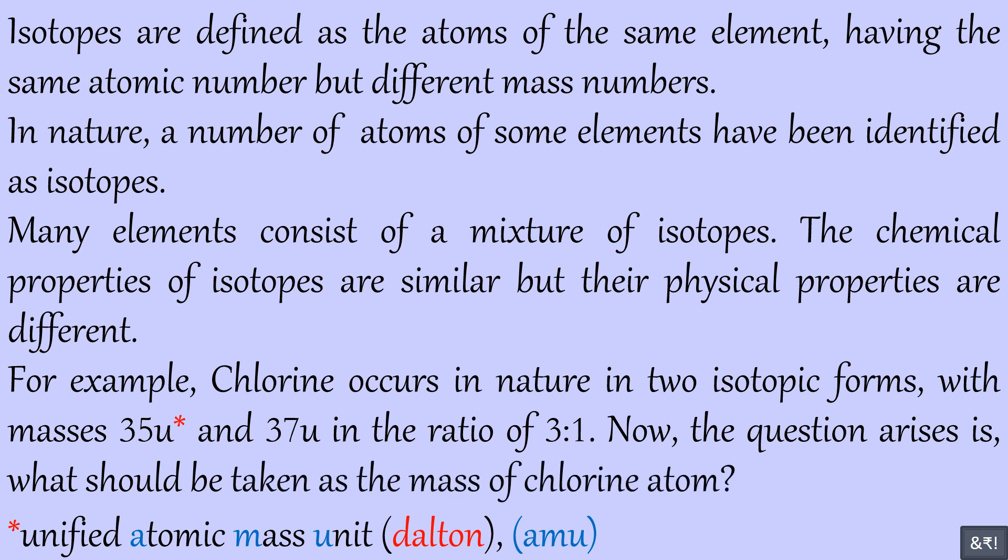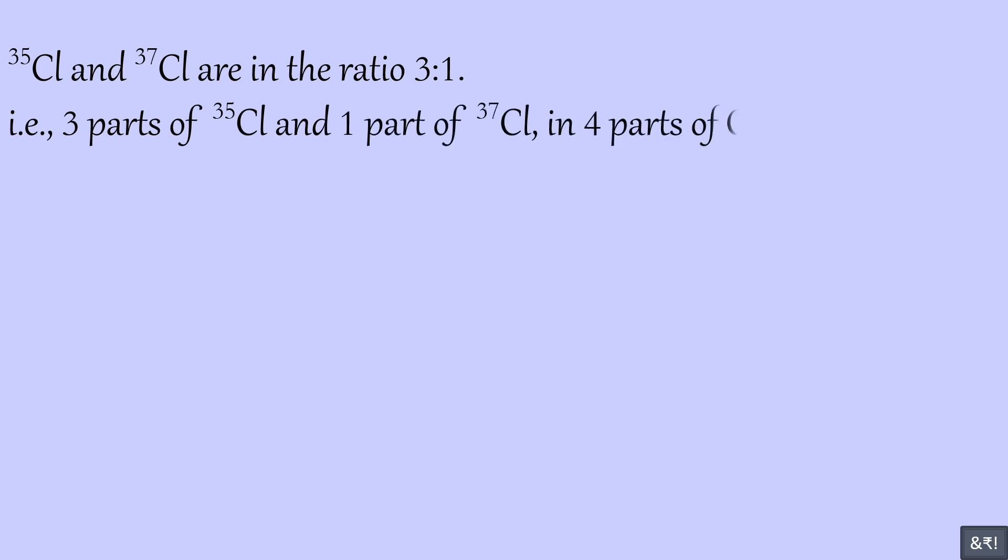Now, the question arises is, what should be taken as the mass of chlorine atom? Chlorine 35 and chlorine 37 are in the ratio 3 to 1. That is, three parts of chlorine 35 and one part of chlorine 37, in four parts of chlorine.